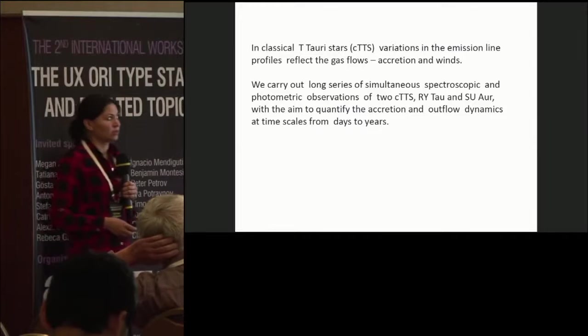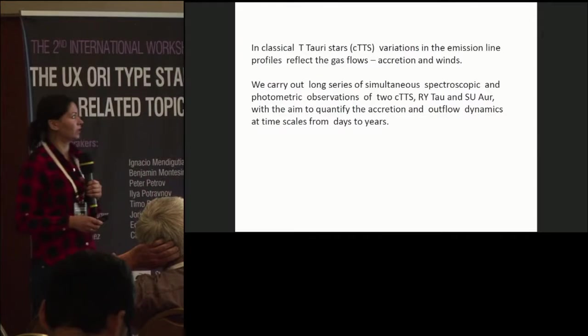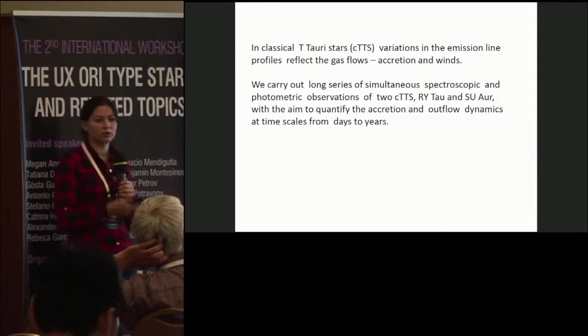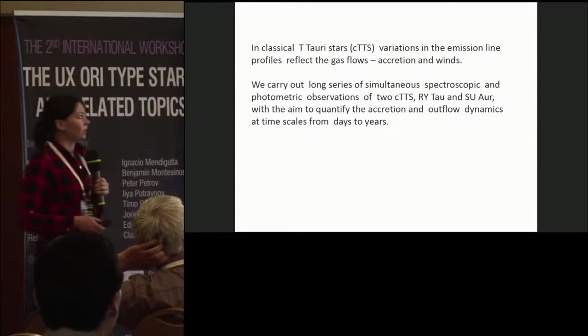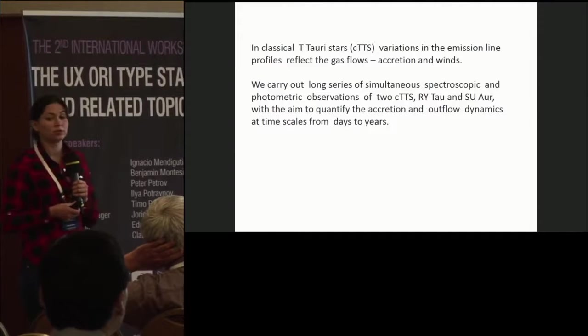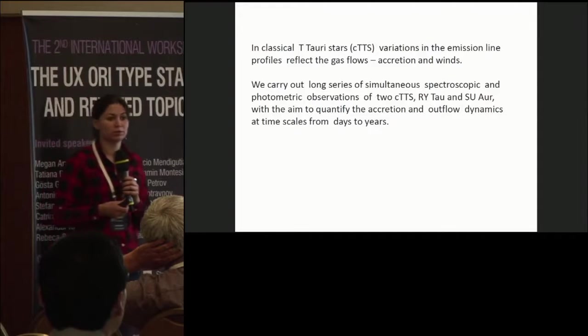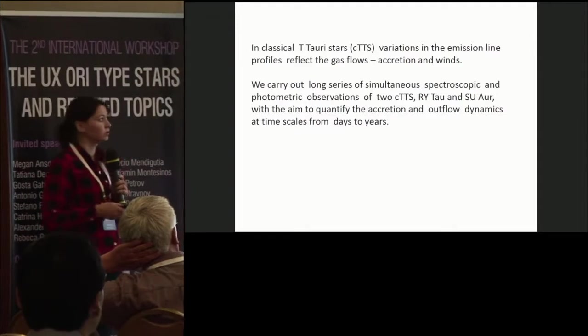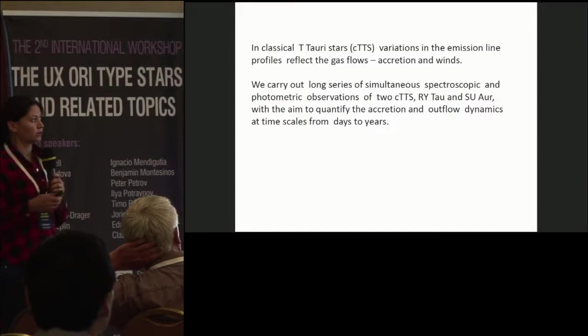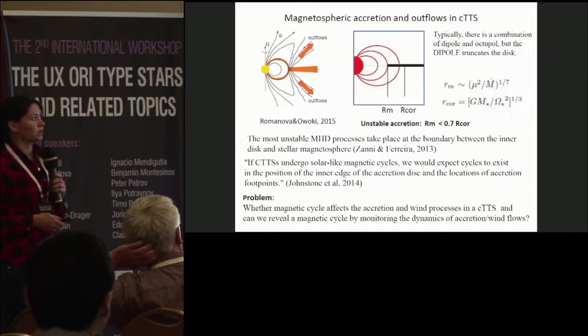In classical T-Tauri stars, variations of emission line profiles reflect the gas flows, accretion and wind. We carry out long series of simultaneous spectroscopic and photometric observations of two classical T-Tauri stars RY Tauri and SU Auriga with the aim to quantify the accretion and outflow dynamics at timescales from days to years.